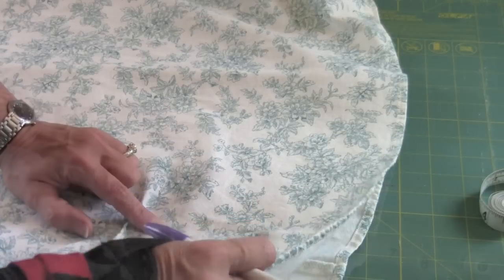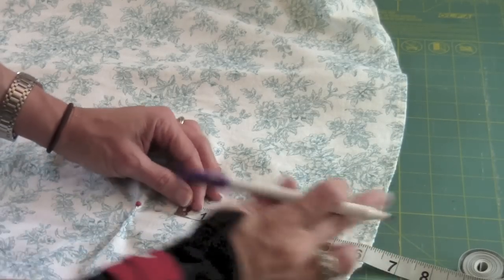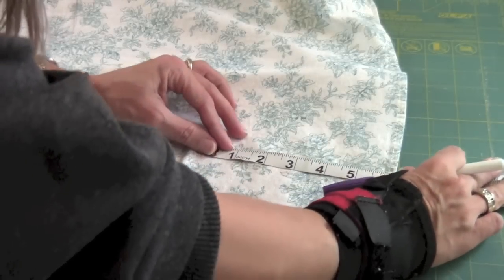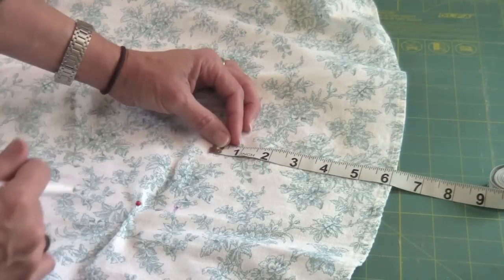That is going to be our new hem. Six inches up from the bottom of the current hem, I am going to place a mark every so often, every couple inches, all the way around the skirt. That is going to be my cutting line.